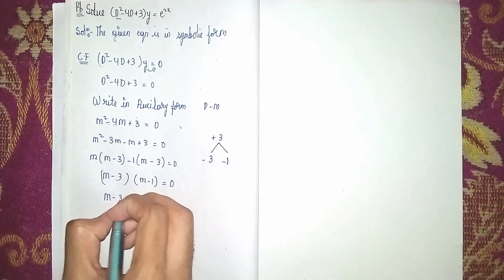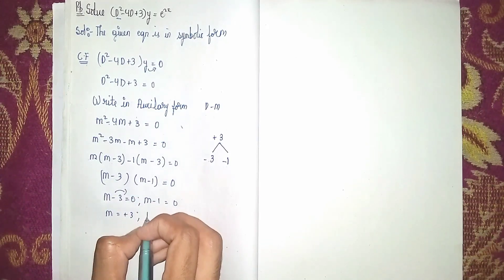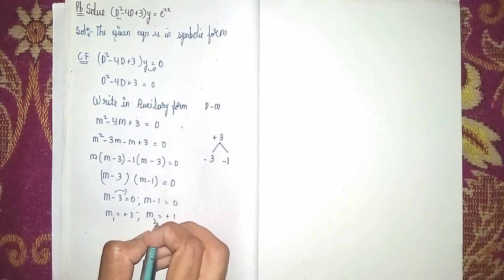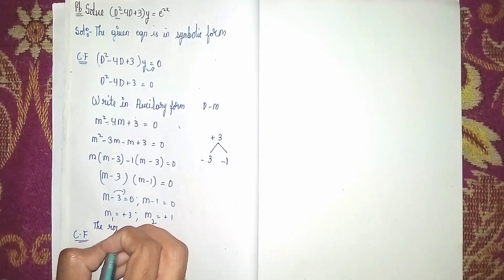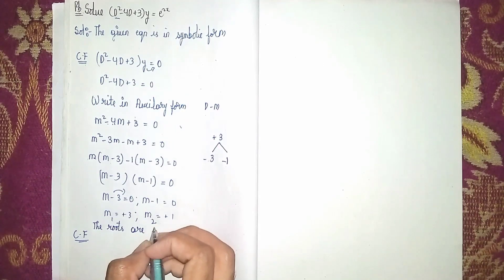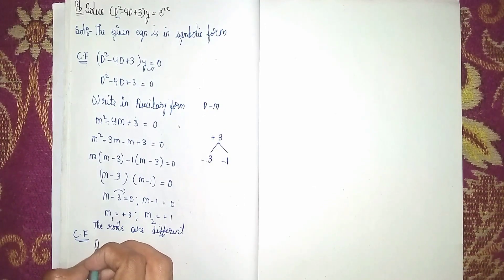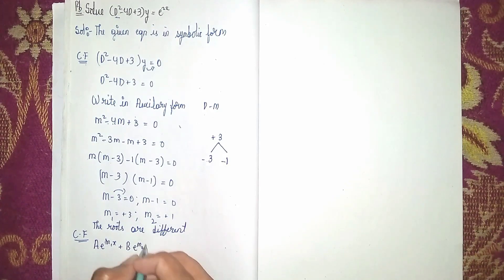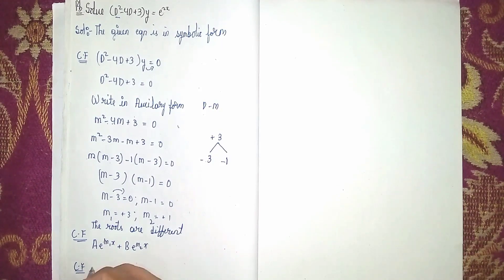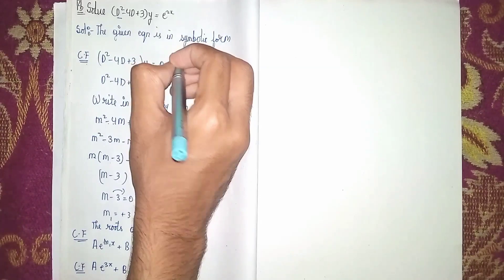So we have (m - 3)(m - 1) = 0. Equating each factor with zero: m - 3 = 0 gives m = 3, and m - 1 = 0 gives m = 1. These are our roots m₁ = 3 and m₂ = 1. Since the roots are real and different, the complementary function is: CF = Ae^(m₁x) + Be^(m₂x) = Ae^(3x) + Be^(x). This completes Step 1.